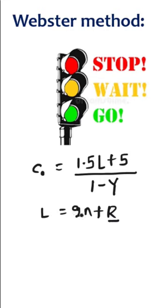Here 2 is for the 2 seconds that is lost time at each phase. And coming to Y, it is the summation of the critical flow ratios at all the phases.